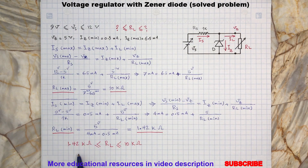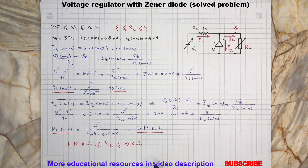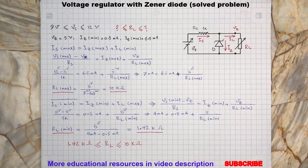So, load resistance should be between 1.42 kΩ and 10 kΩ. Now, a quick exercise for you: can you determine the minimum and maximum load current? It is very easy and you have all the information you need to solve this exercise. Write your findings in the comment section below. I hope you enjoyed watching this video. I have other videos reviewing diode circuits and voltage regulators, which I will put in the playlist under the video description. Please push the notification bell if you would like to get notified when I publish a new video.